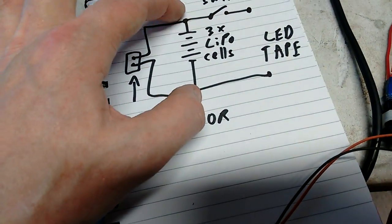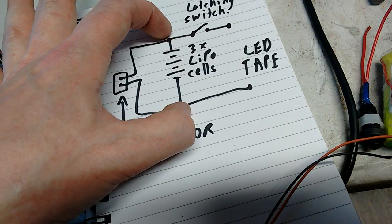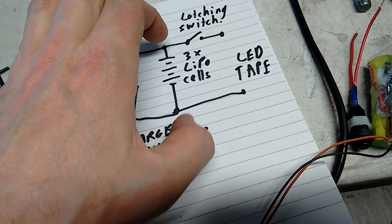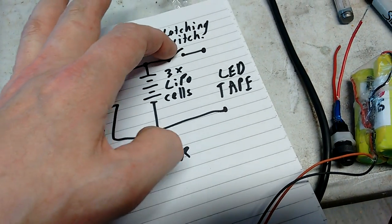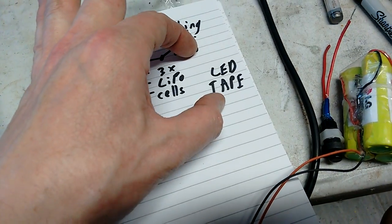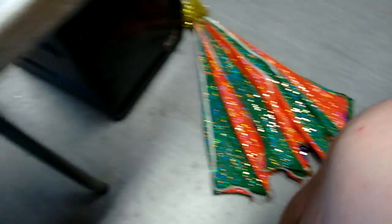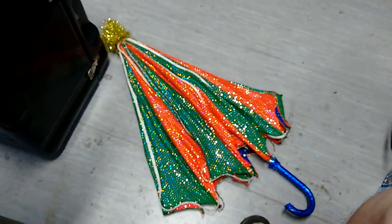And that's just connected straight across these lithium cells. No balancing circuitry or anything like that. There's no short circuit protection either. We've got the latching switch up here and then it just goes out to the LED tape. There's about five meters on these umbrellas.